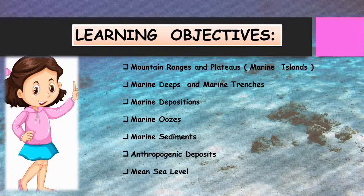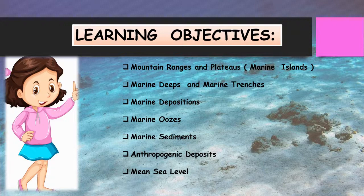Our learning objectives for today will be mountain ranges and plateaus, also called marine islands. The hills and mountains found on the ocean bed are called submerged hills and mountains — these are hundreds of kilometers wide. Peaks of some of these submerged hills come above the sea level, which are visible to us as marine islands. We will also study marine deeps and marine trenches — landforms on the ocean bed which are deep, narrow, and steep, called marine deeps or trenches. Then marine deposition: deposits found mainly on the continental shelf, called marine deposits.